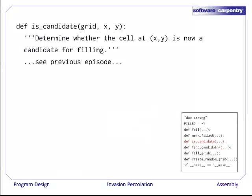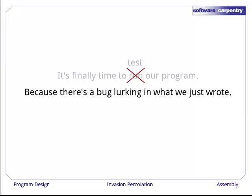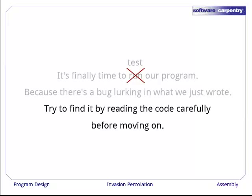We can then insert the is_candidate function, which has the tests that we discussed in the previous episode, right above find_candidates. It's finally time to run our program. Actually, it isn't. It's finally time to test our program, because there's a bug lurking in the code that we just put together. Take a moment now, read over the code, and try to find the bug before moving on to the next episode.